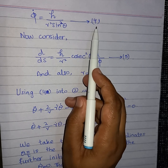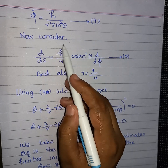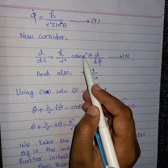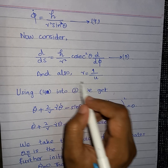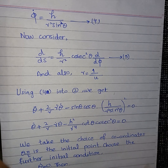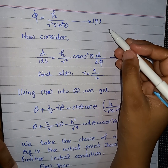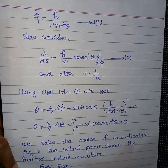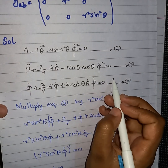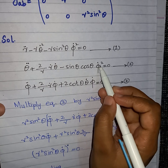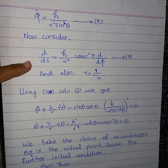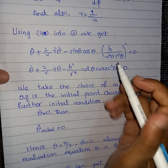Finding the value of φ̇ gives H divided by R² sin²θ — call this equation number 4. Now we consider d/dS = (H/R²) csc²θ · d/dφ, and we also let R = 1/u. Using equation number 4 into equation number 2, substituting the value of φ̇, we obtain the next equation.